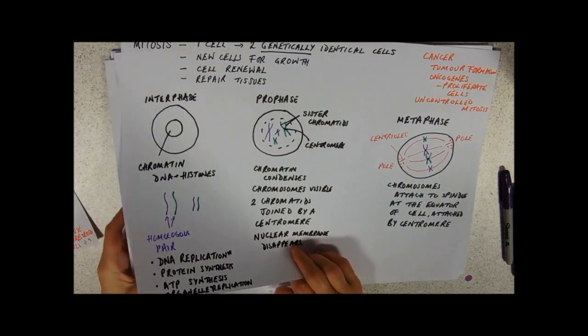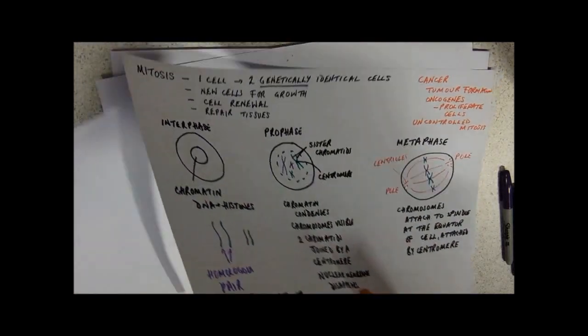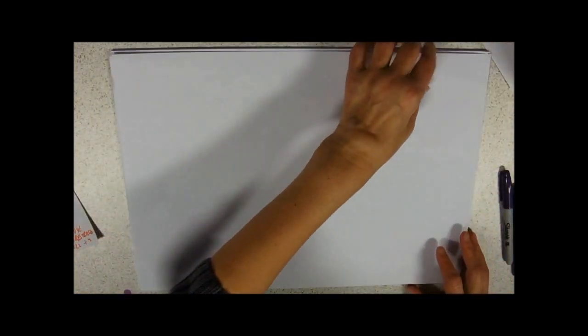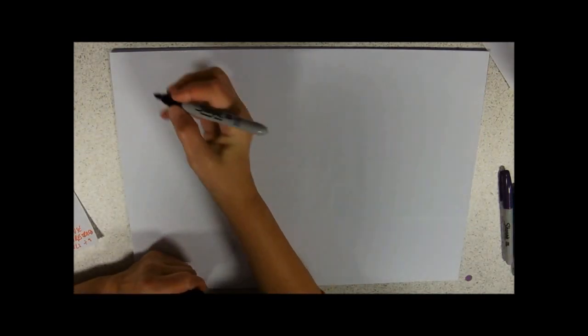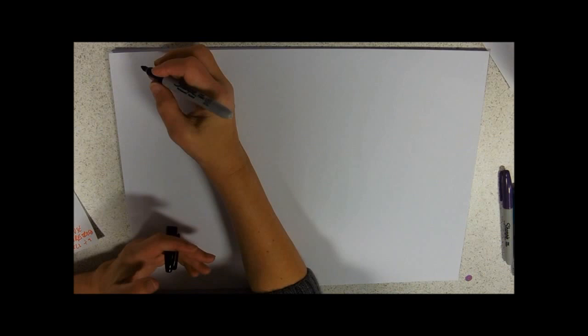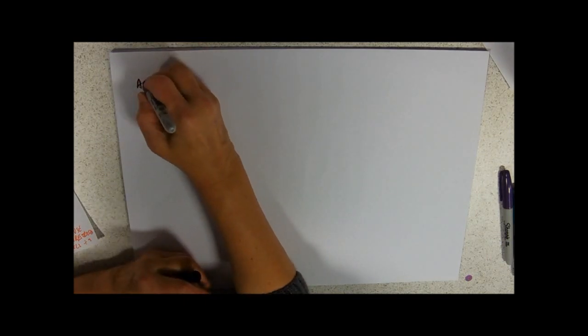So moving on to the next phase. The next phase is anaphase and in anaphase we're going to pull those chromosomes into two halves.